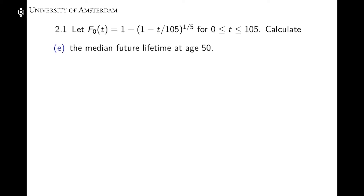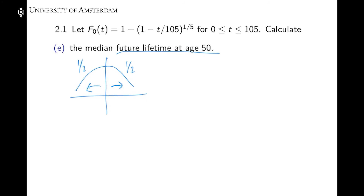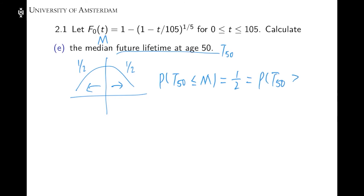In Part E, we need to obtain the median of future lifetime at age 50. Future lifetime is a random variable, and we need to find the median of this random variable. The median is a value m such that the probability of the random variable being less than m is one half, and the probability of it being greater than m is also one half. Denoting the median as m and the future lifetime at age 50 as T50, the probability that T50 is less than or equal to m equals one half, which is the same as the probability that T50 is greater than or equal to m.